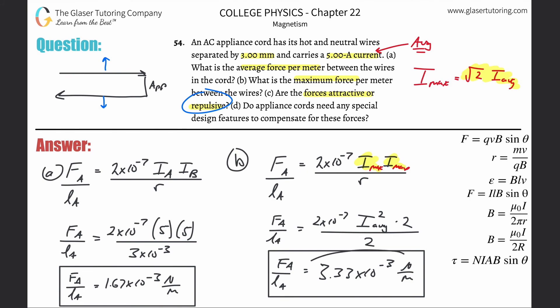So that's the answer to appliance cords need a special design features to compensate for these forces. You know, this force per meter is like nothing. I mean, it's pittance. So I mean, they wrap it up in a wire coating, in a plastic coating basically to protect it. But not to keep it really together. It's really nothing. Anyway, alright. That's it guys. Thanks so much for tuning in. Hopefully that helps. Please remember to help us out and subscribe and I'll see you soon. Take care.